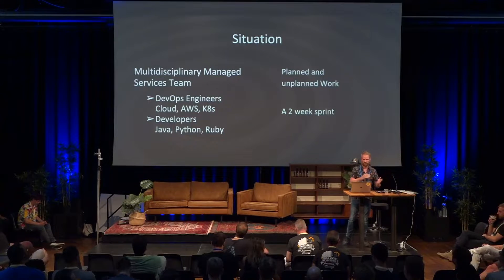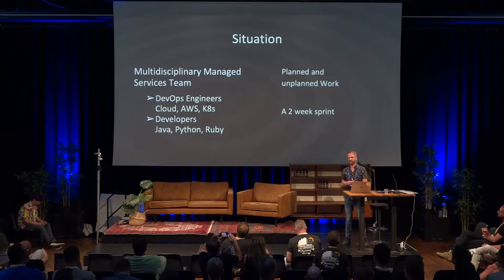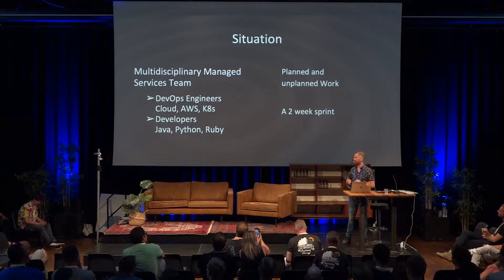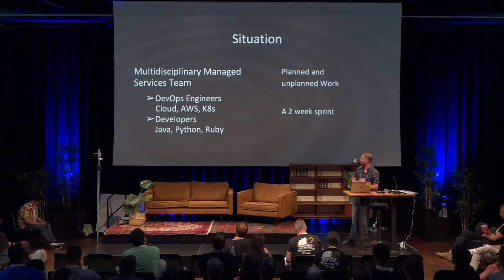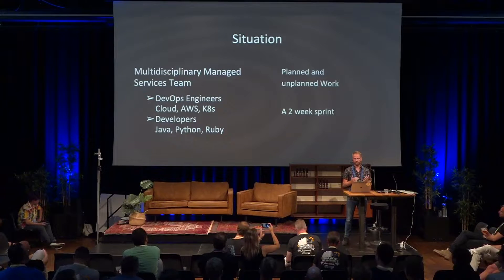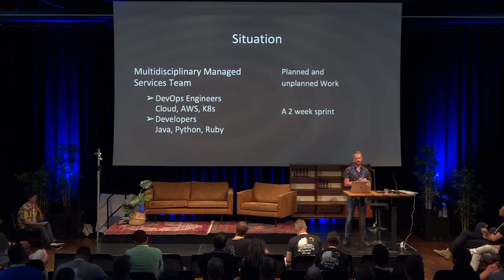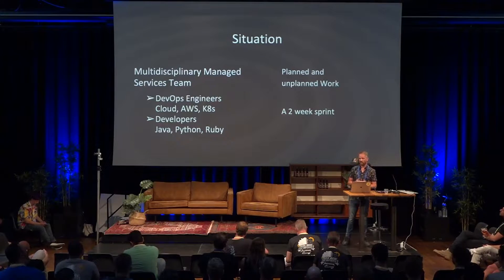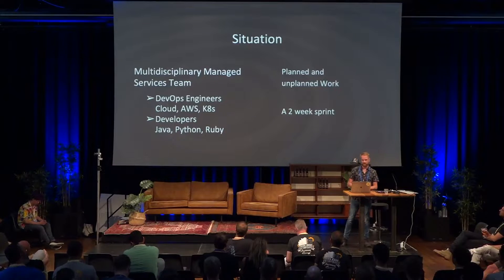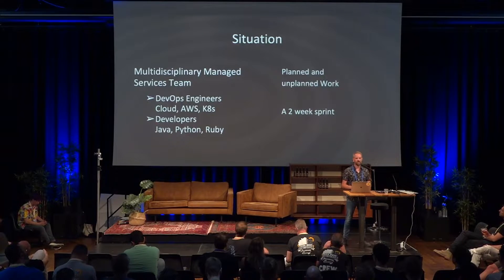On one part of the team we have DevOps engineers specialized in mainly Cloud, AWS, and Kubernetes. On the other hand, we have colleagues specialized in software development, focused on Java, Python, and Ruby. Our managed services team is the hub of the organization, so a lot of requests and questions enter our team. Because we are a managed services team, we have to deal with planned and unplanned work, and this can be difficult sometimes.